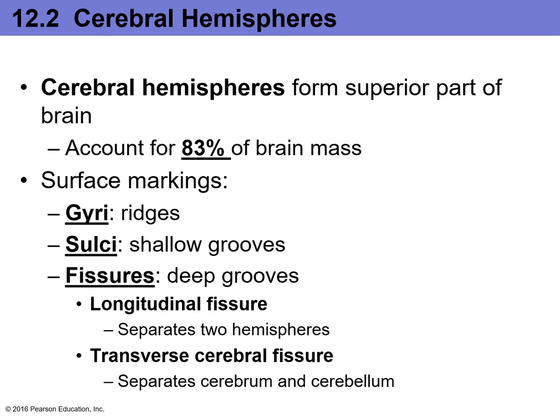Cerebrospinal fluid helps protect the brain — it acts as a lubricant and shock absorber. It should not contain any microorganisms. Both the brain and spinal cord have CSF around them; it flows down the central canal and back up along the sides of the spinal cord. Think of the brain as surrounded by fluid that absorbs shock waves and reduces trauma from blows to the head.